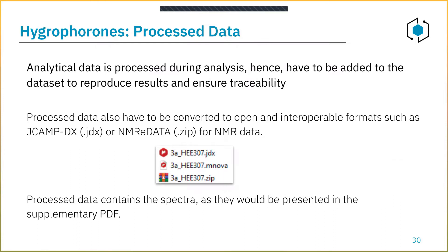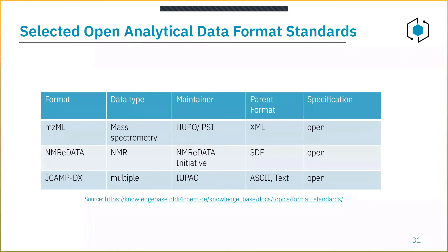Similarly we have the processed data for the NMR - so there would be individual JCAMP-DX files for the actual spectra, the assignments done with MestReNova also put out there, and one of the open formats for NMR is NMReDATA. Just a few examples here - you see at the bottom we have a link to the NFDI4Chem knowledge base where we're starting to assemble information. There is a page done by David Rau on data formats and standards: for mass spectrometry we have mzML as mentioned; NMR might have NMReDATA, and JCAMP-DX can actually capture multiple types of spectra and is developed and maintained by IUPAC.